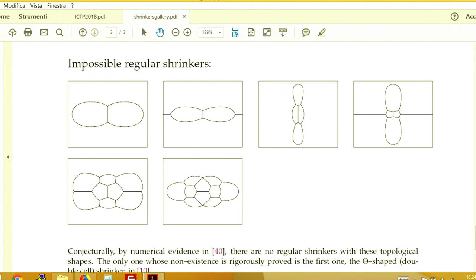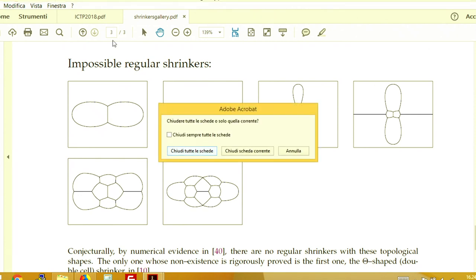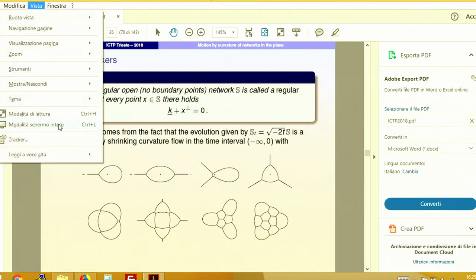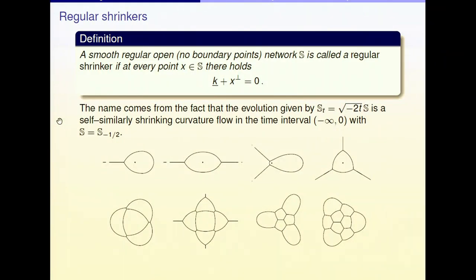So there are several possible blow-up limits you can get, and as you can imagine, the possibilities are related to the topology of the moving network, with the idea that when you take a limit the topology can only simplify. So the lower the complexity of the original network's topology, the fewer blow-up limits you can obtain.